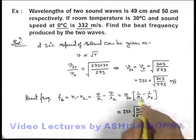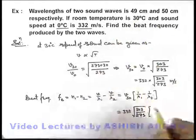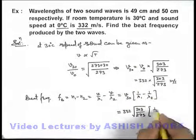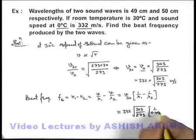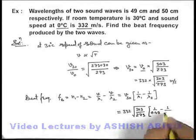Multiplied by the wavelengths, which are 49 and 50 centimeters. So it will be 1 by 0.49 minus 1 by 0.5.